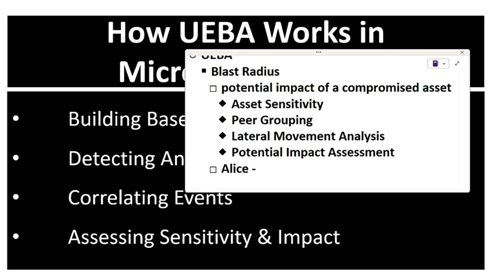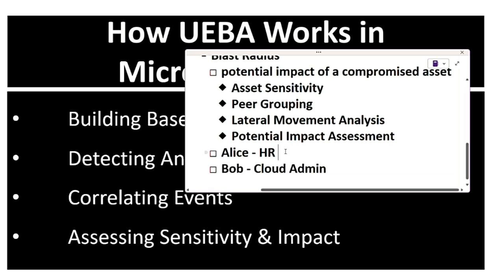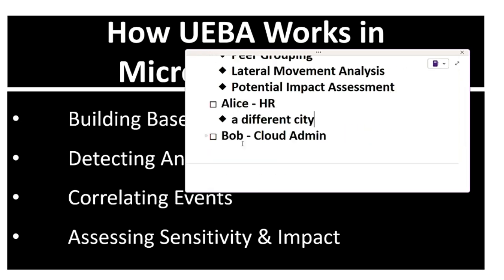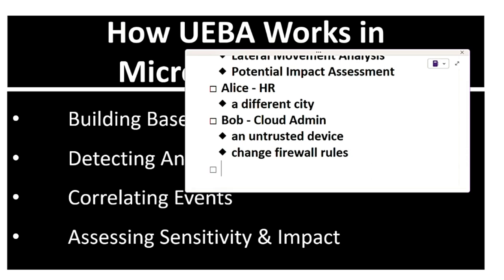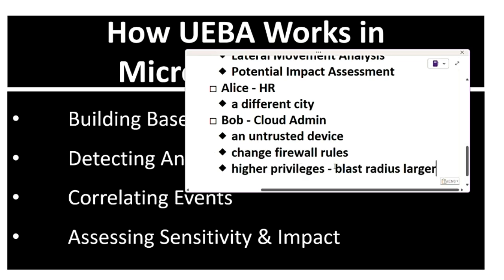For example, consider two users: Alice is an HR staff and Bob is a cloud administrator. Alice logs in from a different city than usual, and Bob logs in from an untrusted device and attempts to change firewall rules. UEBA prioritizes the risk - Bob's role has higher privileges, so the blast radius is larger if compromised. Sentinel prioritizes Bob's alert as a higher risk than Alice's. This is how assessing sensitivity and impact works in UEBA.